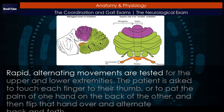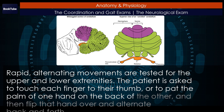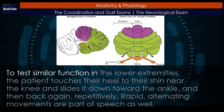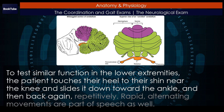Rapid alternating movements are tested for the upper and lower extremities. The patient is asked to touch each finger to their thumb, or to pat the palm of one hand on the back of the other and then flip that hand over and alternate back and forth. To test similar function in the lower extremities, the patient touches their heel to their shin near the knee and slides it down toward the ankle and then back again, repetitively.